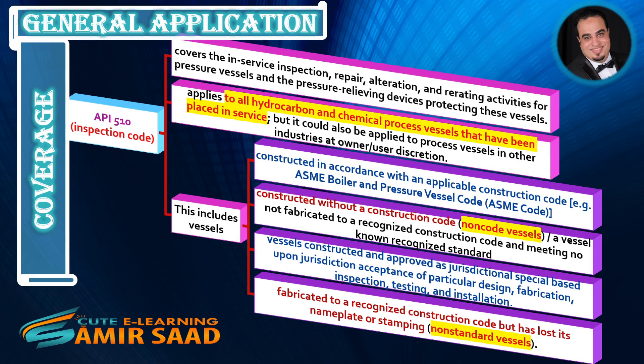This includes vessels constructed in accordance with an applicable construction code — for example, the ASME Boiler and Pressure Vessel Code — as well as a vessel not fabricated to a recognized construction code and meeting no known recognized standard; vessels constructed and approved as jurisdictional special, based upon jurisdiction acceptance of particular design, fabrication, inspection, testing, and installation; and vessels fabricated to a recognized construction code but that have lost their nameplate or stamping, termed as non-standard vessels.